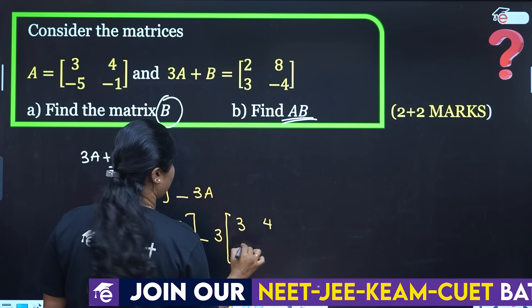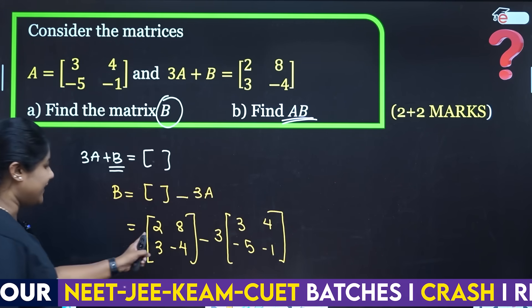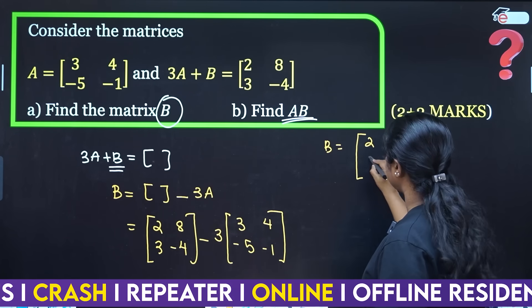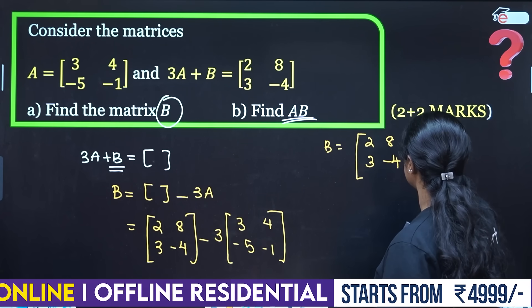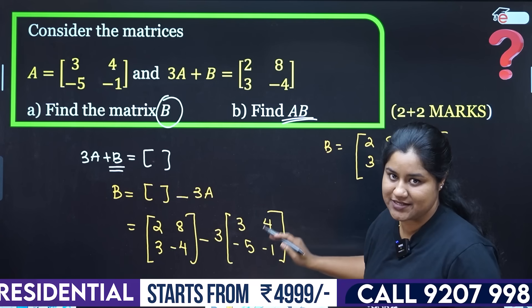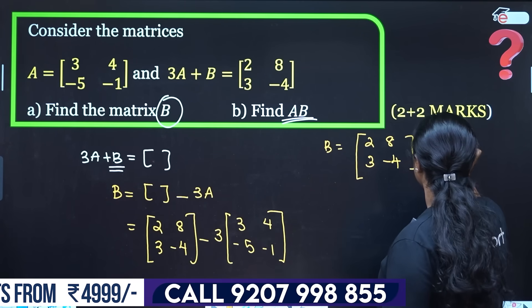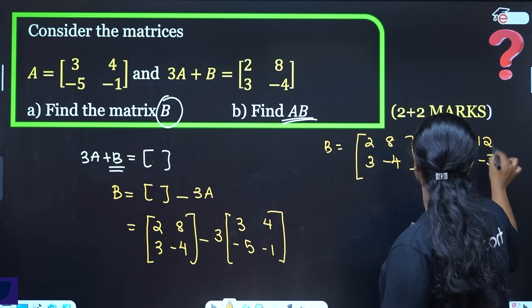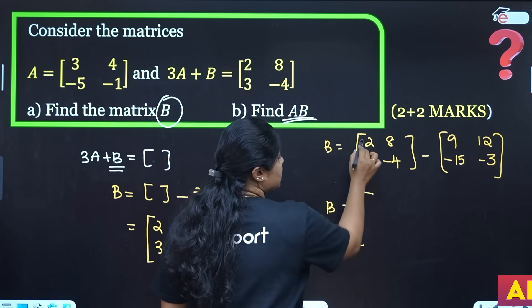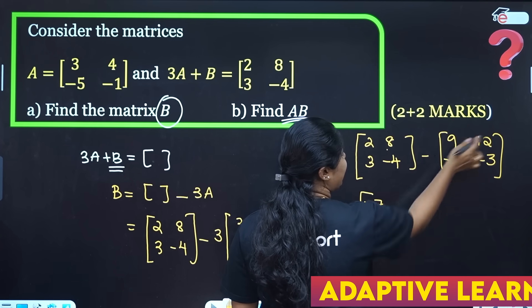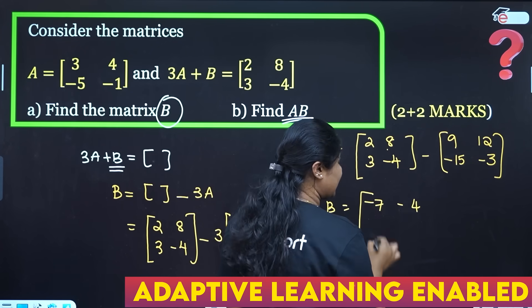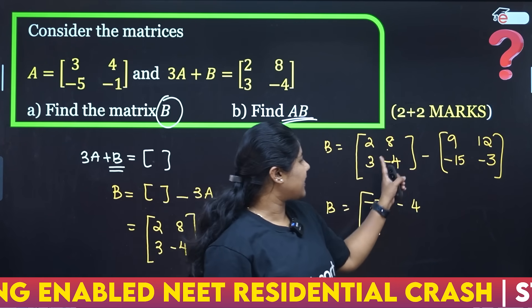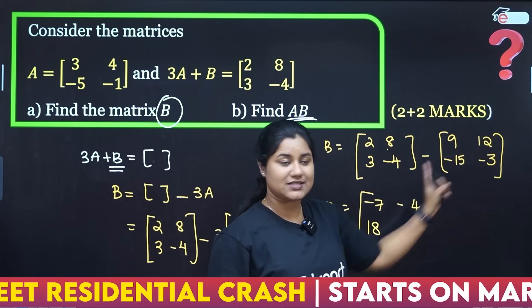So b equals [2, 8; 3, minus 4] minus 3×[3, 4; minus 5, minus 1]. That means 3×3=9, 3×4=12, 3×(minus 5)=minus 15, 3×(minus 1)=minus 3. So b equals [2 minus 9, 8 minus 12; 3 minus(minus 15), minus 4 minus(minus 3)], which gives [minus 7, minus 4; 18, minus 1].